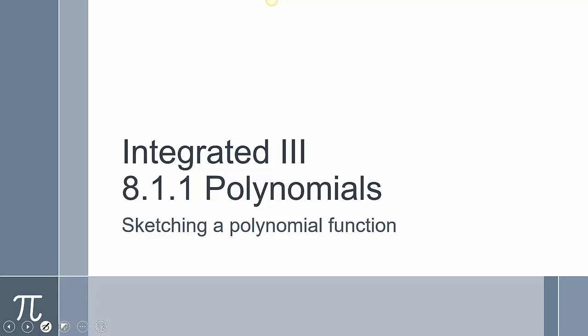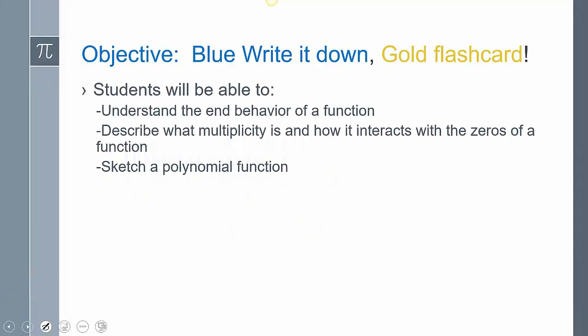The objective and goal is going to be: we're going to understand the end behavior of a function, we're going to describe what multiplicity is and how it interacts with the zeros of a function, and then we're going to sketch a polynomial function. We need to know those other two things to be able to sketch a polynomial function.